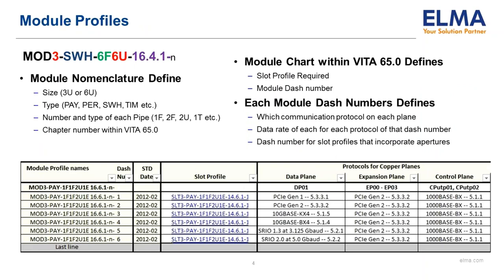Each module profile has a chapter in VITA 65.0 as well. The primary slot profile to which they conform is identified and any related rules and permissions are listed. Because each module profile may support different signaling protocols, a dash number is defined for each unique module configuration. These module profile dash numbers are listed as separate rows in the table in VITA 65.1. If different slot profile dash numbers are required, those are also added.